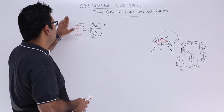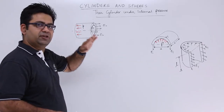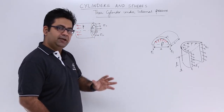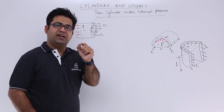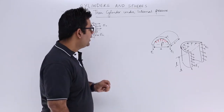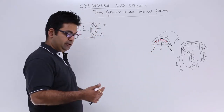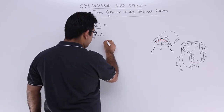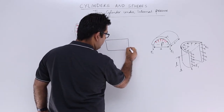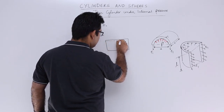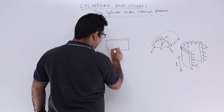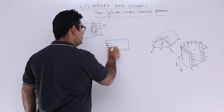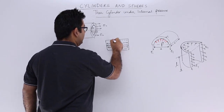Let's start the chapter on cylinders and spheres. The first topic is the thin cylinder under internal pressure. This means we have a cylinder whose thickness is very less compared to its diameter, and it is being subjected to an internal pressure. The thickness is very small compared to the diameter, and internal pressure acts on it.